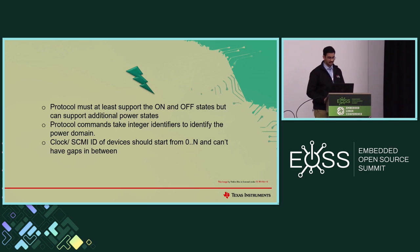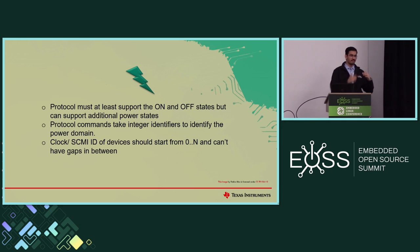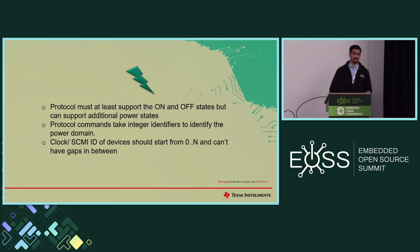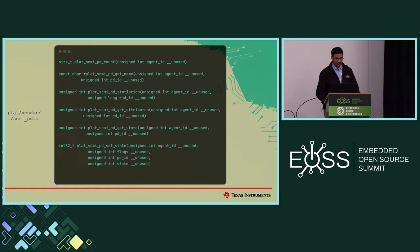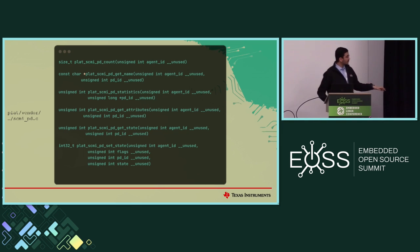Let's look at power domains inside TFA and SCMI. The protocol mandates on and off states at the minimum, but you can also support additional power states depending on your silicon. The protocol commands take integer identifiers — you can assign numbers like 0, 1, 2, 3 to identify which domains you want to toggle. Importantly, your SCMI IDs should always start from 0 and go up to N with no gaps in between — this is what the protocol mandates. Here's what a sample power domain driver looks like: you have the PD count to tell Linux how many PDs you have, you can get PD names, statistics, and attributes, and most importantly you want to know and be able to set the state — whether the PD is on or off.